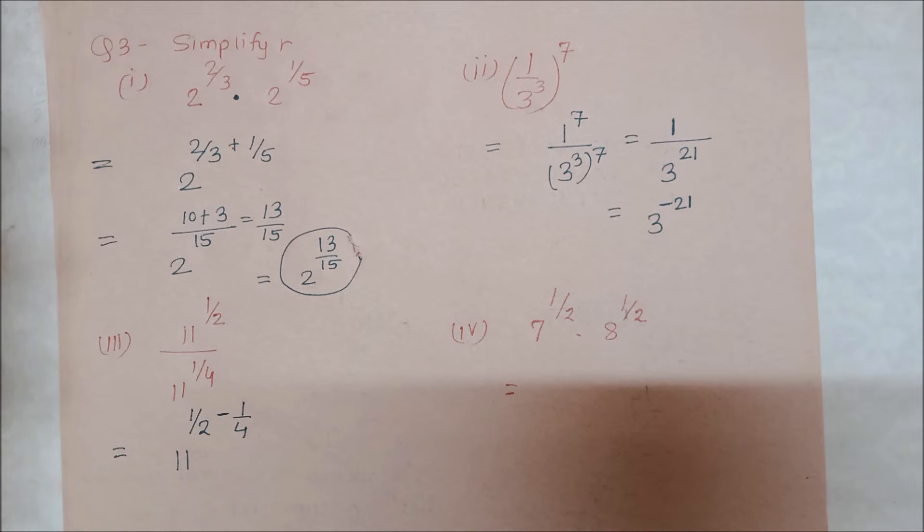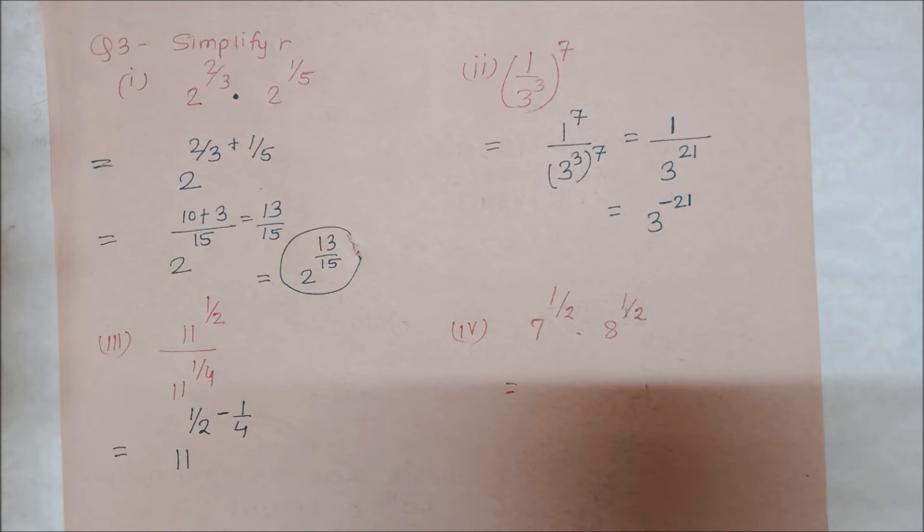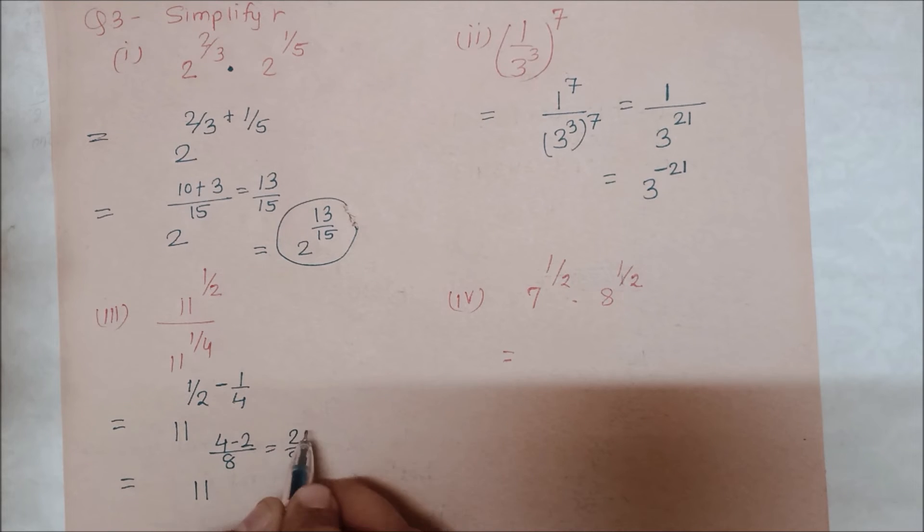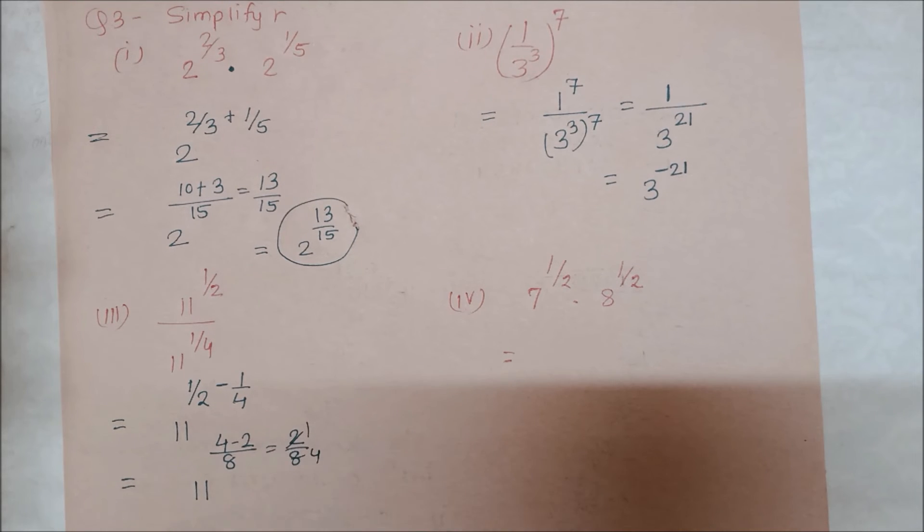So what you have to do is 1/2 minus 1/4. Again, when we do subtraction of fractions, we need to find the LCM. 11 is our base, and 4 times 2 is 8. Above comes 4 times 1 is 4 minus 2, so 4 minus 2 is 2, and 8 remains as it is. So 2/8, which is 1/4.